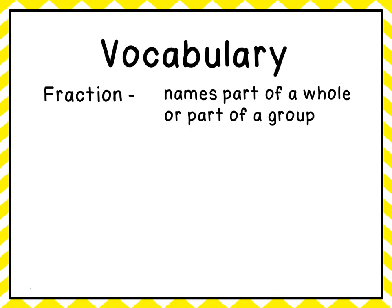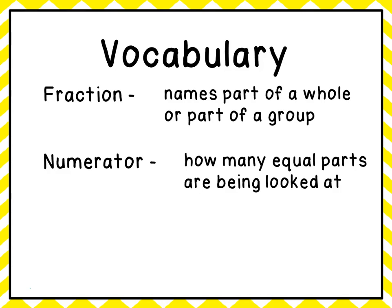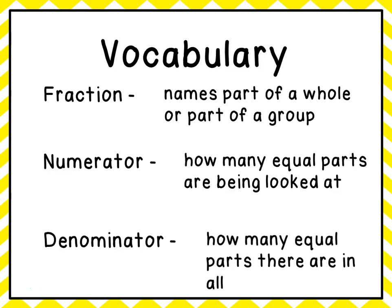So that's what we're going to be looking at — fractions — and there are two parts to a fraction. The first one is the numerator, and the numerator tells us how many parts are being looked at. The bottom part is the denominator, and the denominator tells us how many equal parts there are in all. So the numerator is the top, it tells us what we're looking at, and the denominator is the bottom number, and it tells us how many parts there are all together. That's called a fraction.